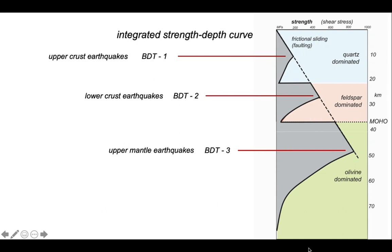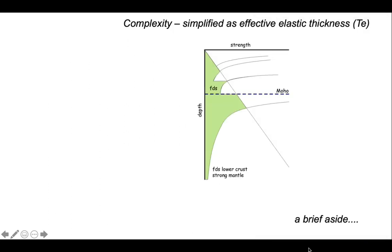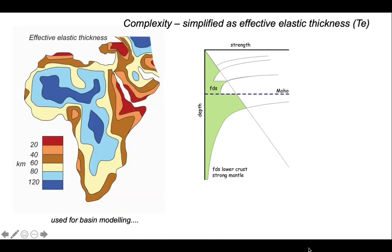By allowing composition to vary, we can generate quite complicated strength-depth profiles. Developing geodynamic models that require understanding the relationship between strength and depth therefore requires understanding not only the thermal structure but also the composition — and that often involves too many unknowns. So it's common to simplify the rheology of the lithosphere and quote it as a single parameter: the effective elastic thickness. This map of effective elastic thickness for Africa and part of the Middle East shows variations from 120 kilometers down to below 20 kilometers. Effective elastic thickness does not correspond to any real layering in the Earth — it's a proxy for the integrated composite strength-depth curve, but it's a useful parameter for basin modeling.